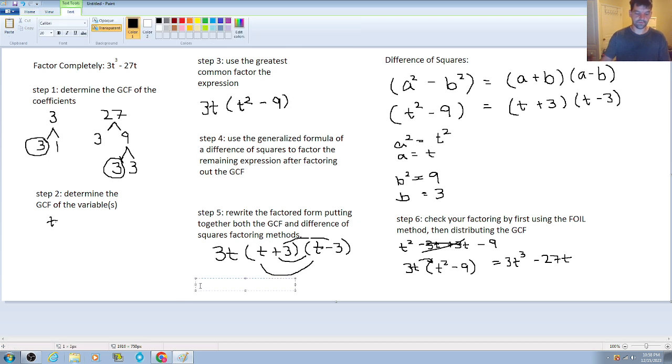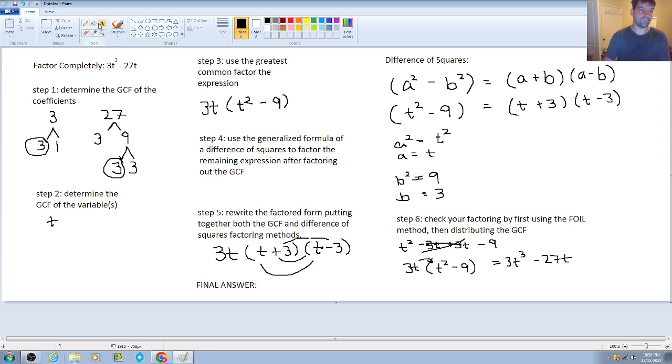is going to be that your fully factored expression will be 3t times the quantities t plus 3 times t minus 3.